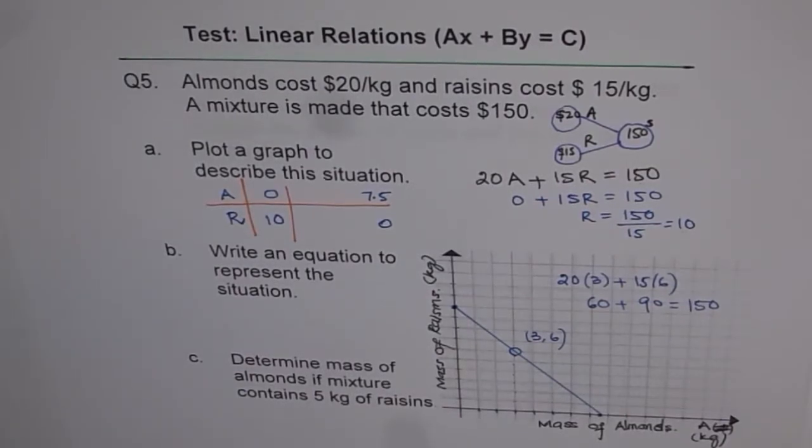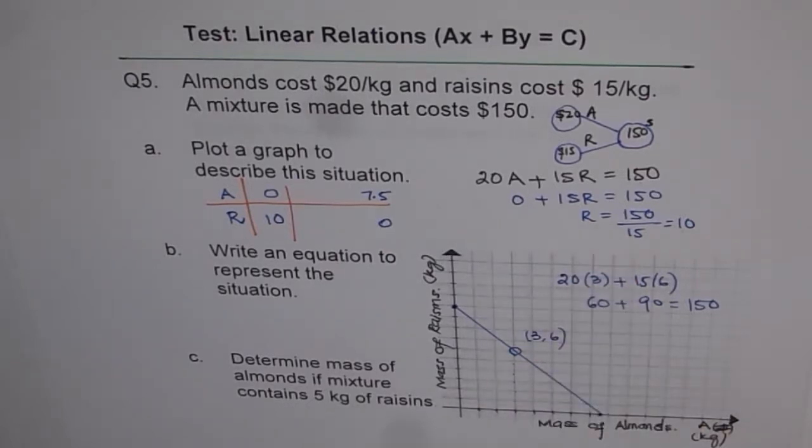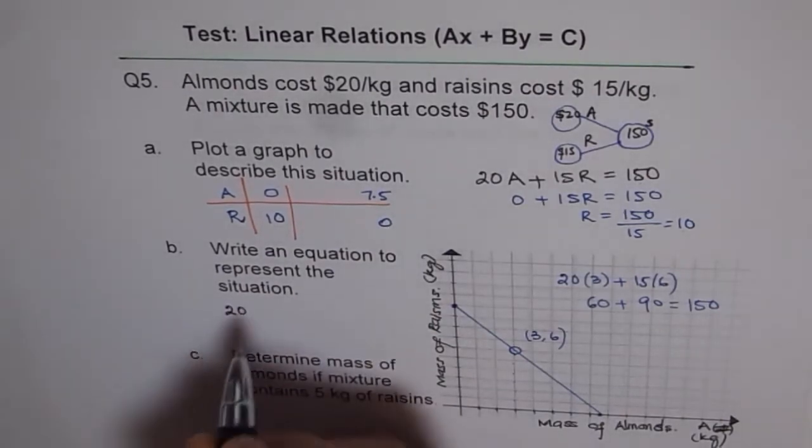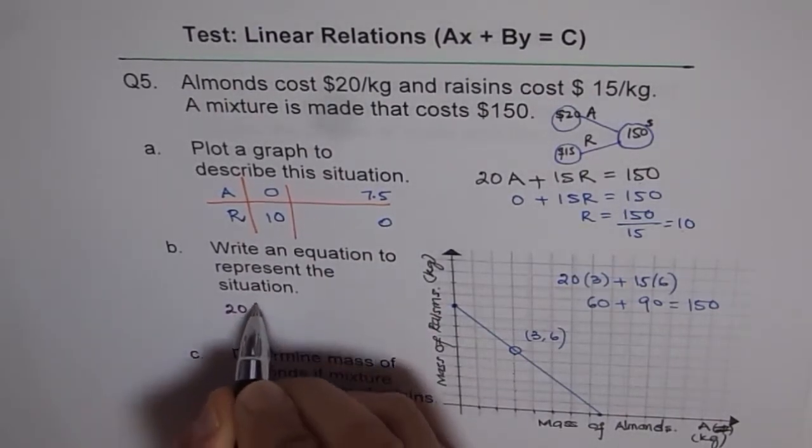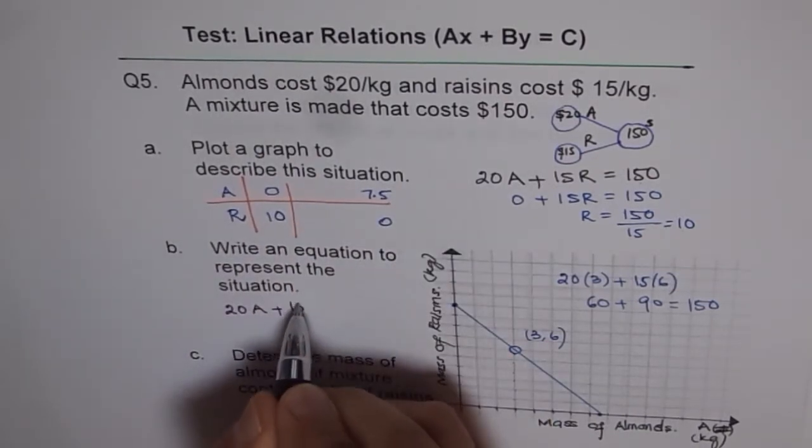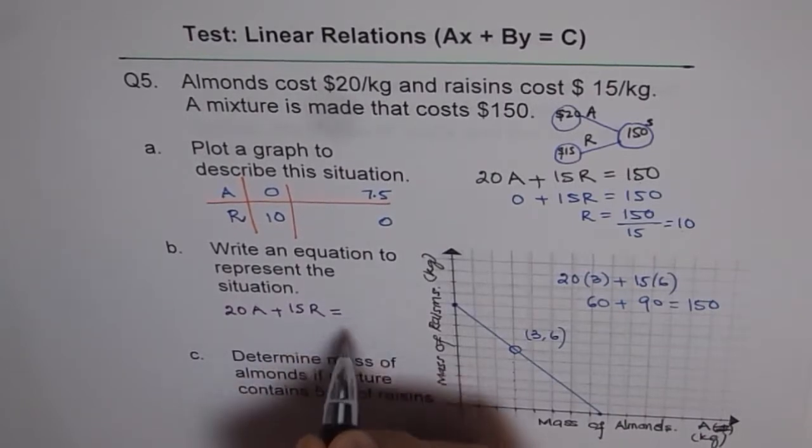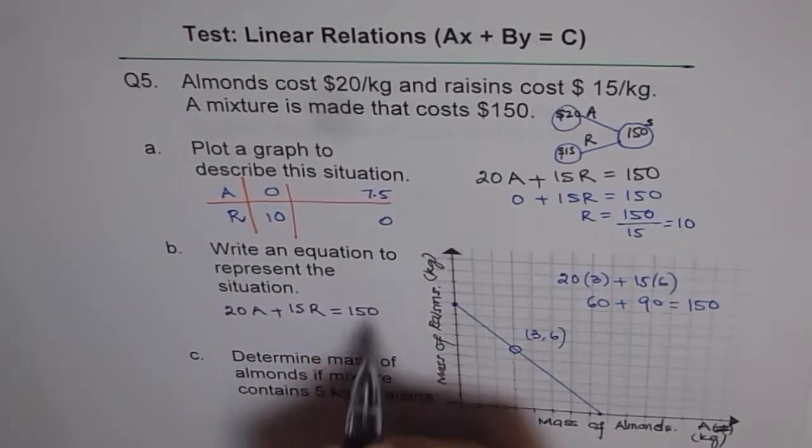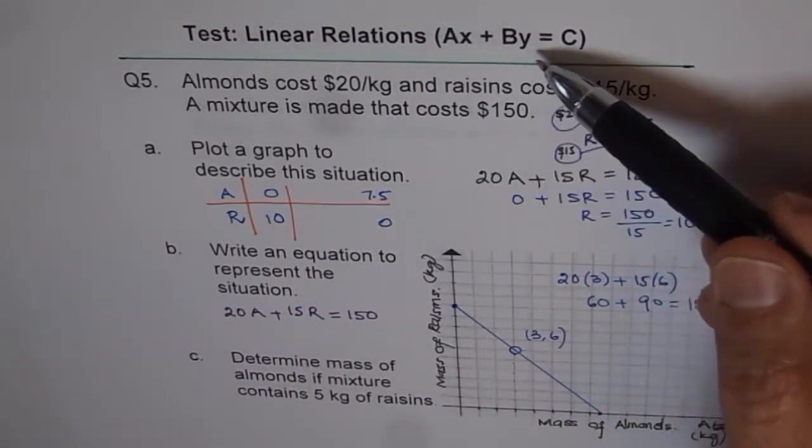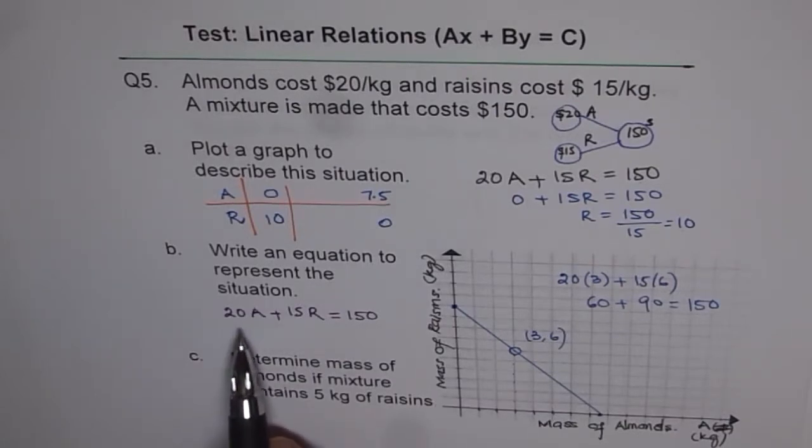So part B is write an equation to represent the situation. So we started with the equation. And the equation for us is 20 times mass of almonds plus 15 times mass of raisins is equal to 150. So you see this equation is of the form Ax plus By equals C.